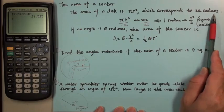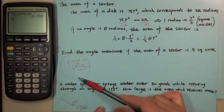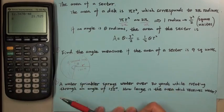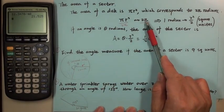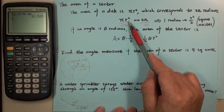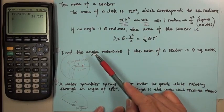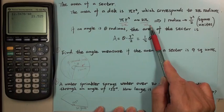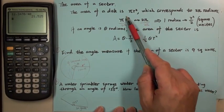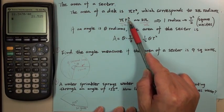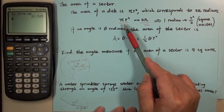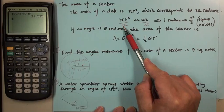The area of the disk corresponds to a central angle of two π radians — that's one full circle. So two π radians corresponds to the area of the disk, which is π r squared. If we divide both sides by two π, the two π on the left cancels to one, and on the right π cancels with π, giving us r squared over two.